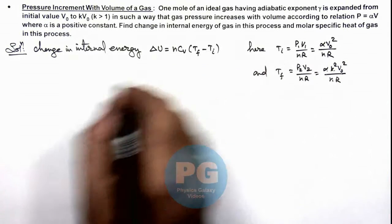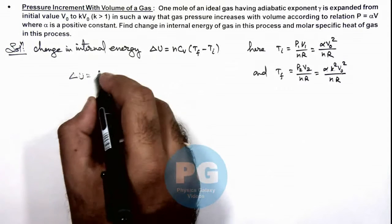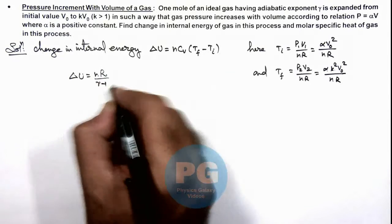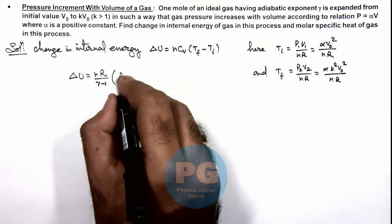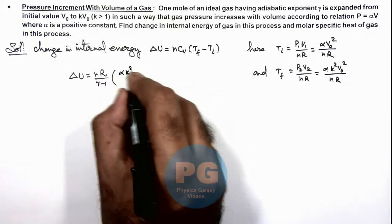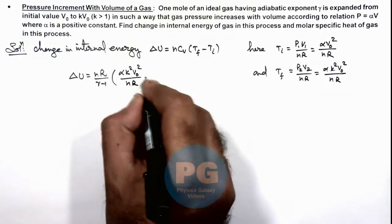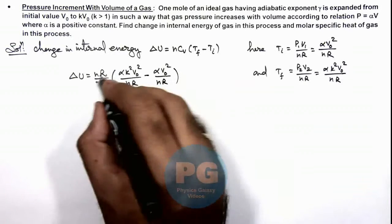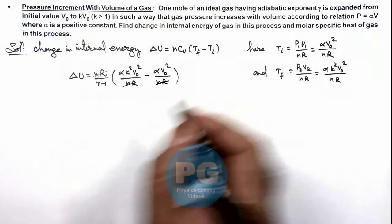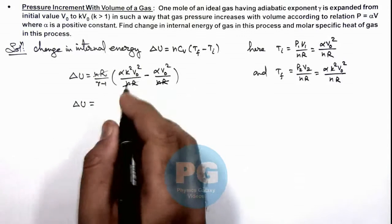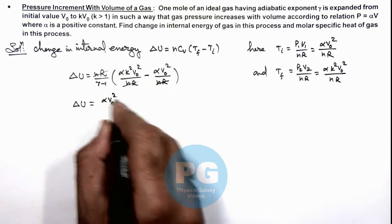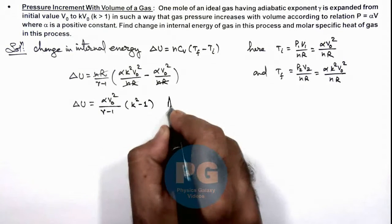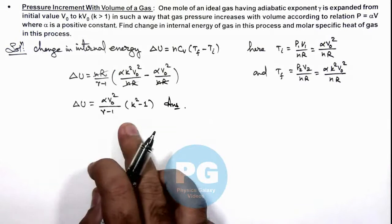So if we substitute the values over here, delta U can be given as n, the value of Cᵥ we can write as R by (γ-1) multiplied by T final minus T initial, which is αk²V₀² by nR minus αV₀² by nR. Here, this nR gets cancelled out, and the internal energy change can be directly written as αV₀² by (γ-1) multiplied by (k²-1). This is one result of the problem for change in internal energy.